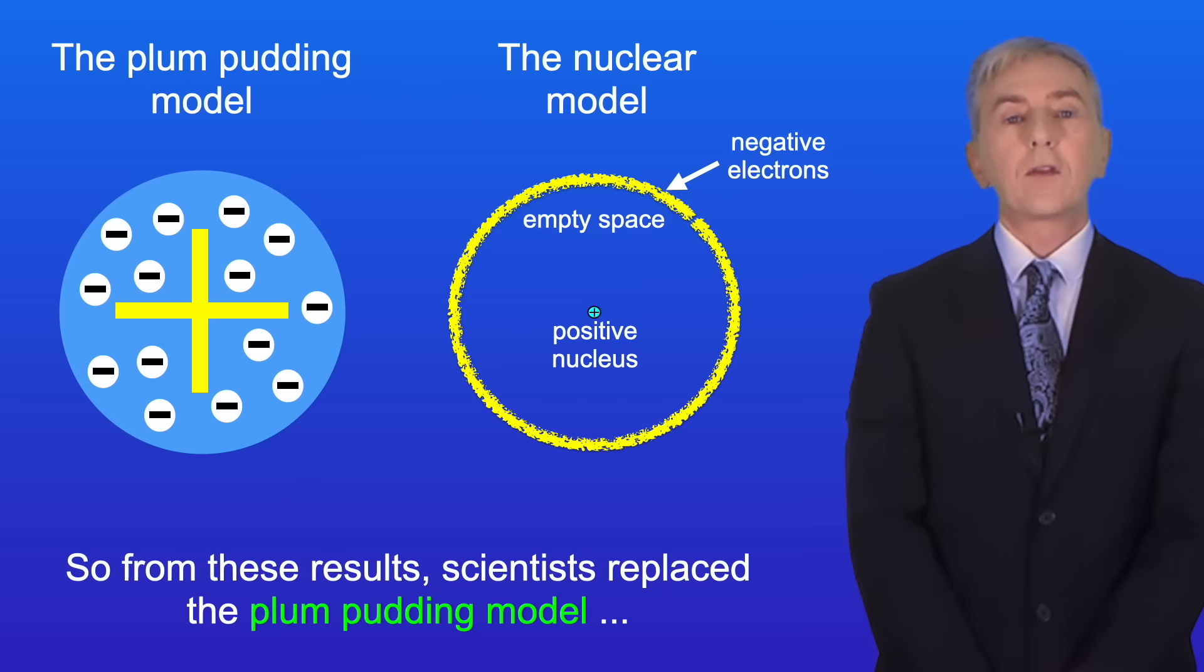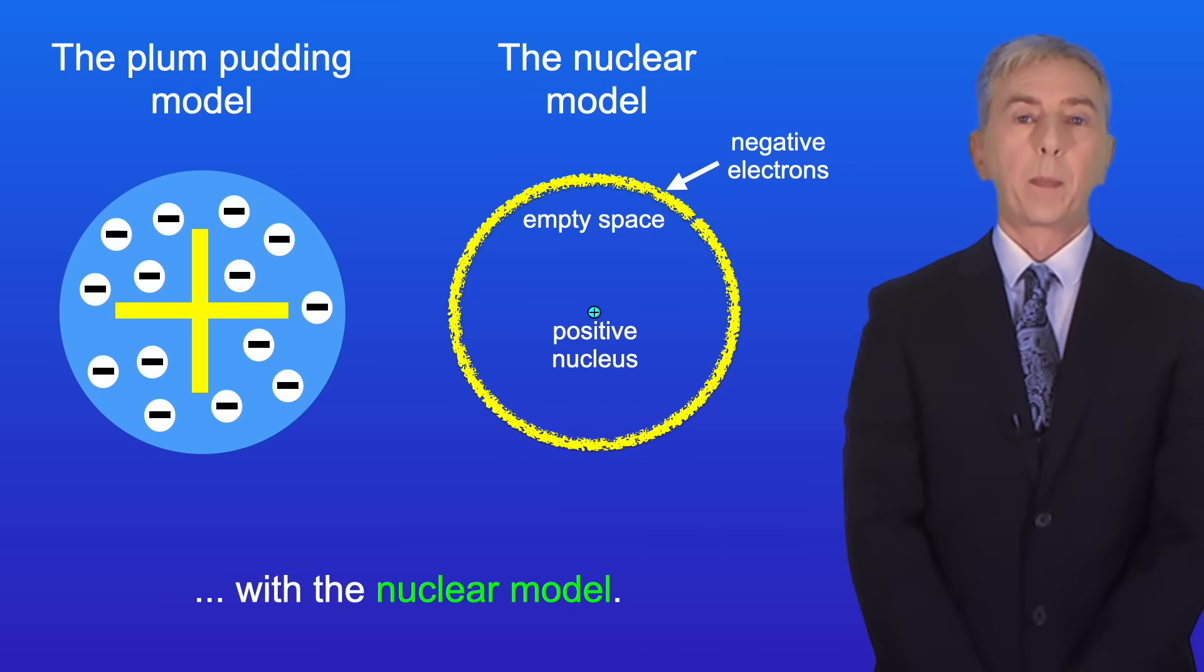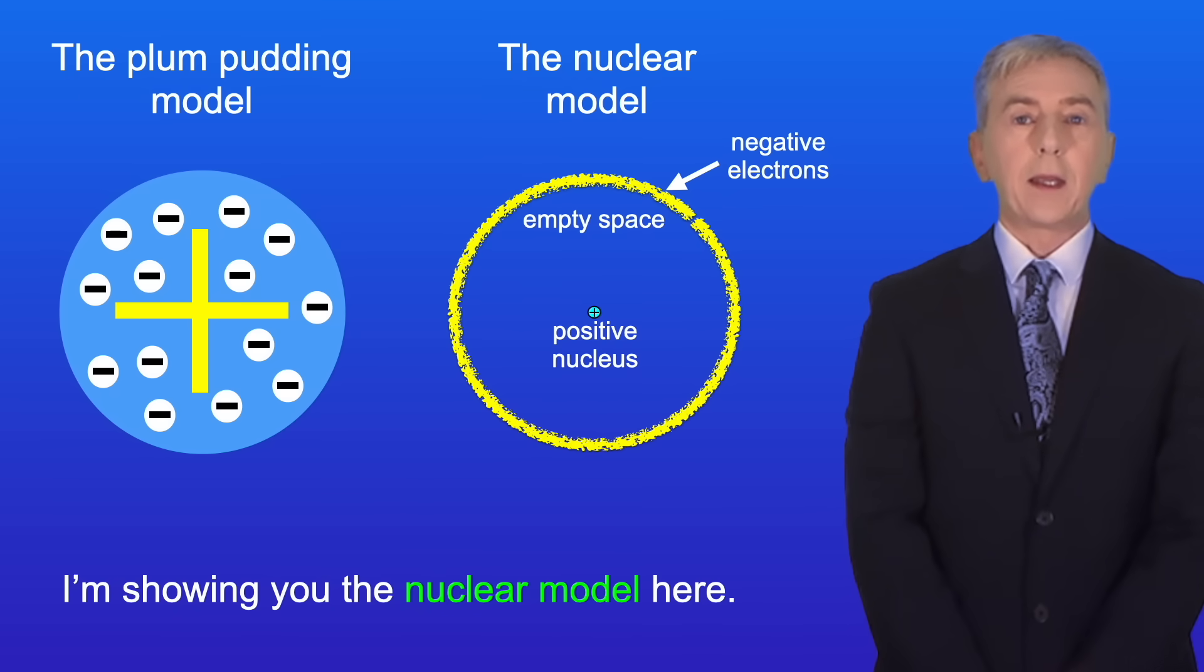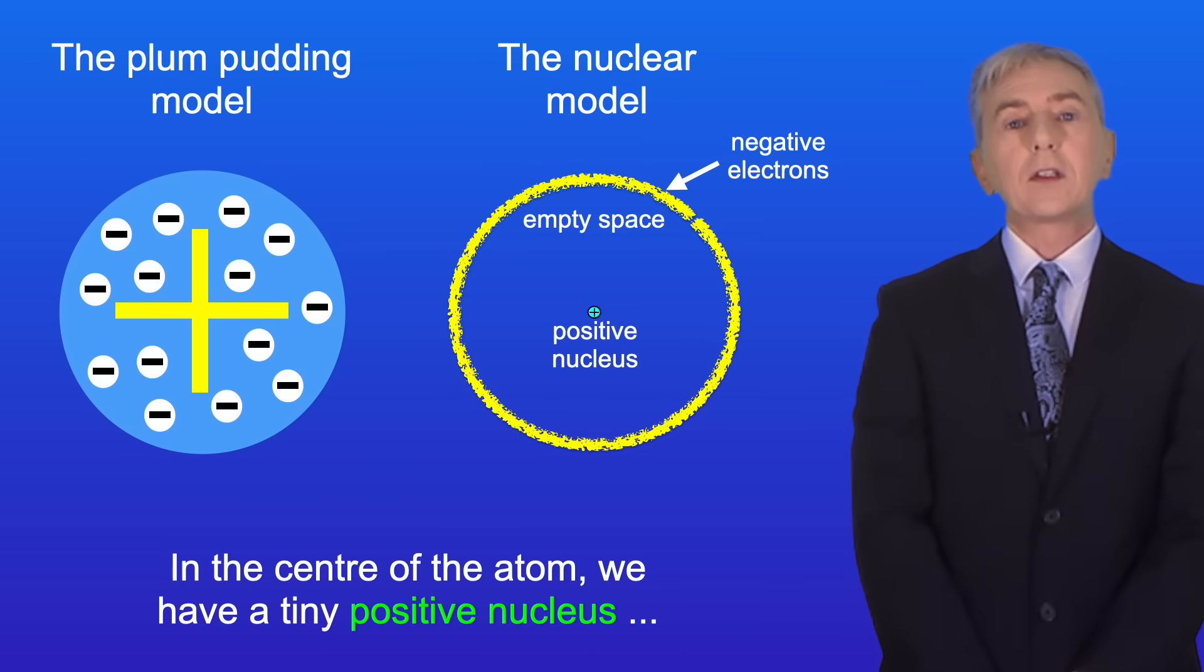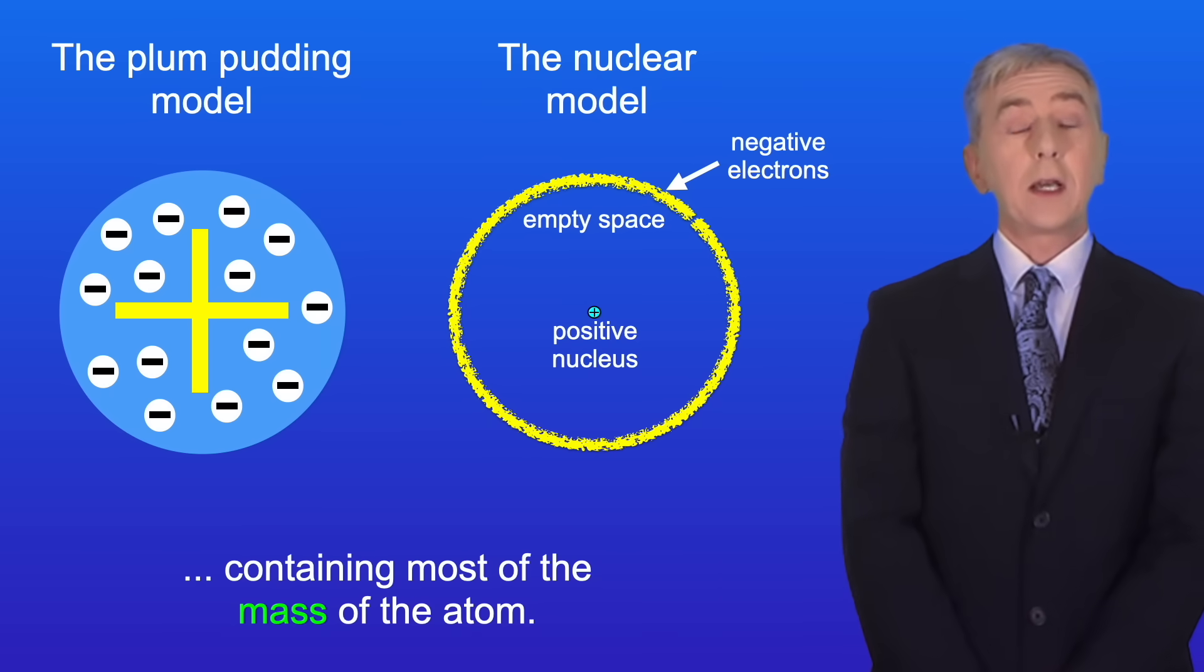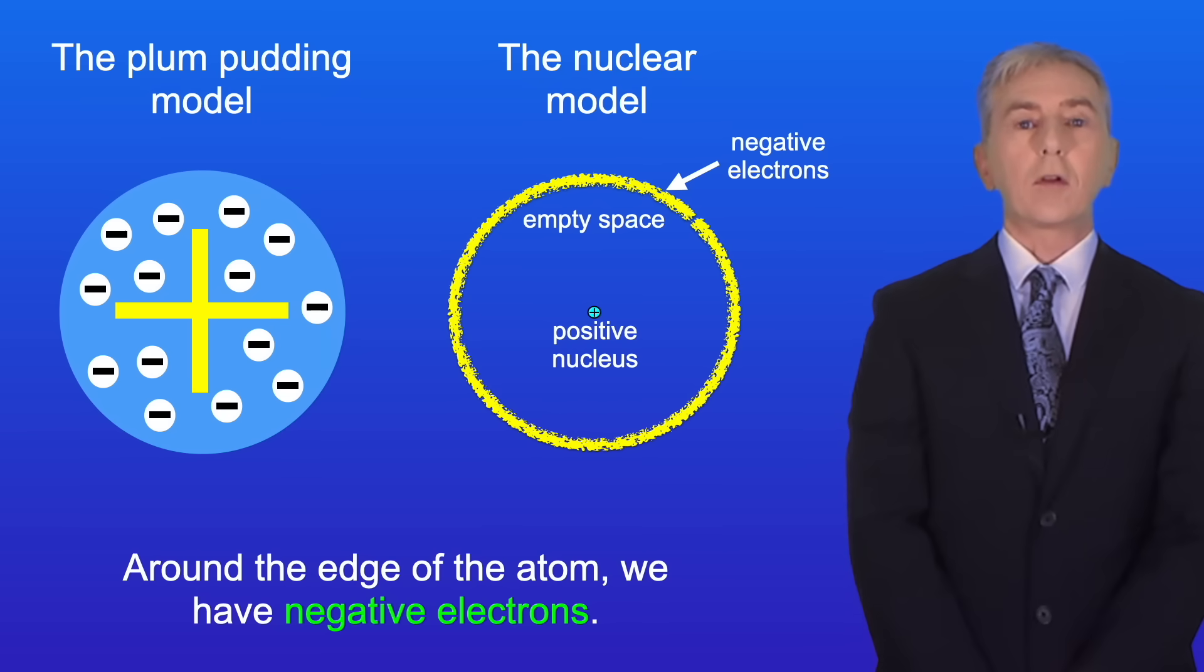So from these results, scientists replaced the plum pudding model with the nuclear model. I'm showing you the nuclear model here. Most of the atom is simply empty space. In the center of the atom we have a tiny positive nucleus containing most of the mass of the atom. And around the edge of the atom we have negative electrons.